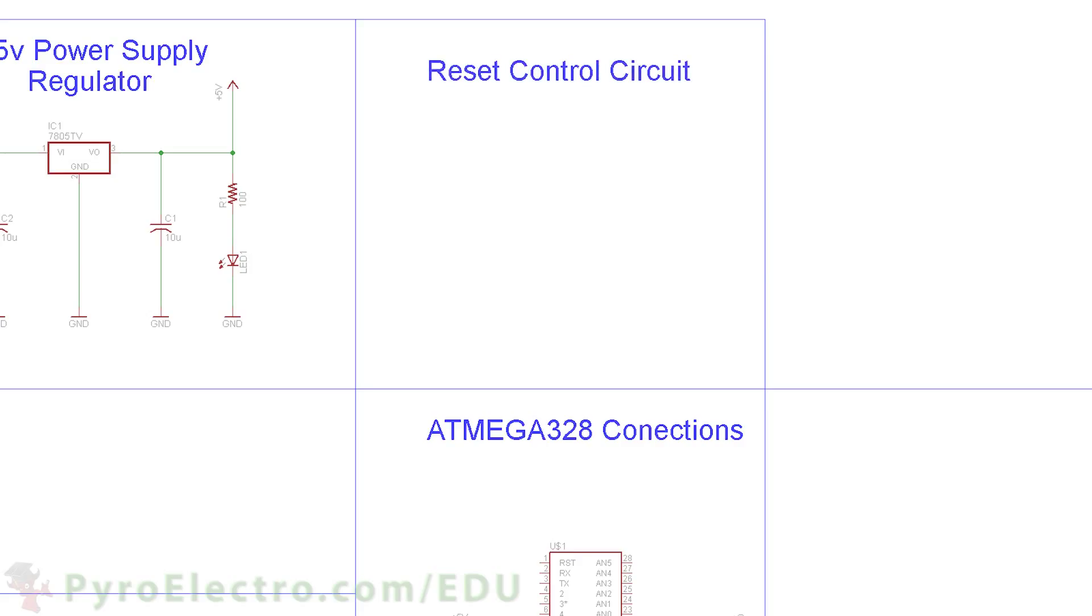For the reset control circuit, we use a push button connected to ground and pin 1 of the microcontroller. Then a pull-up resistor pulls pin 1 up to plus 5V.